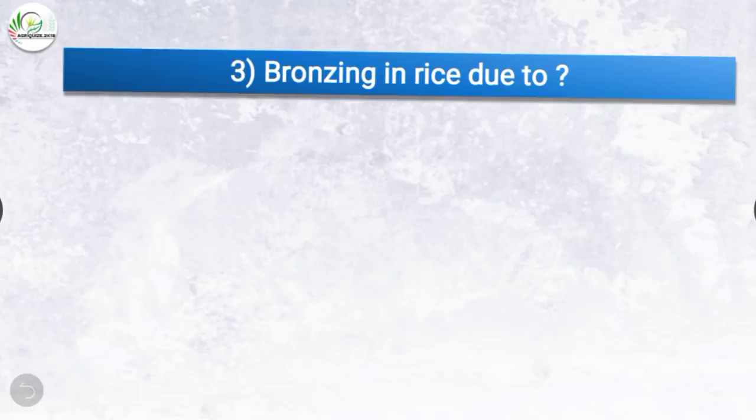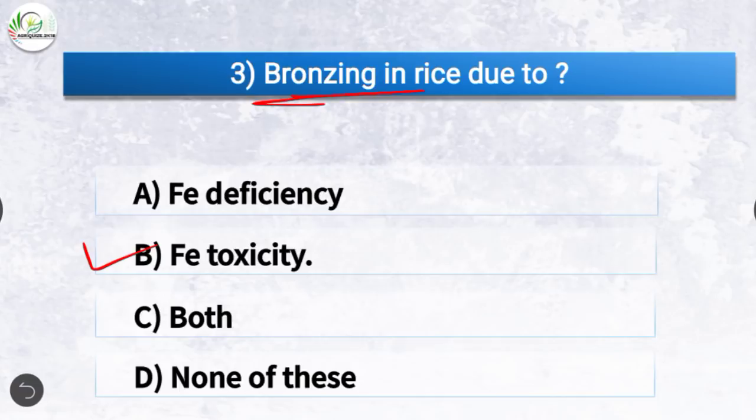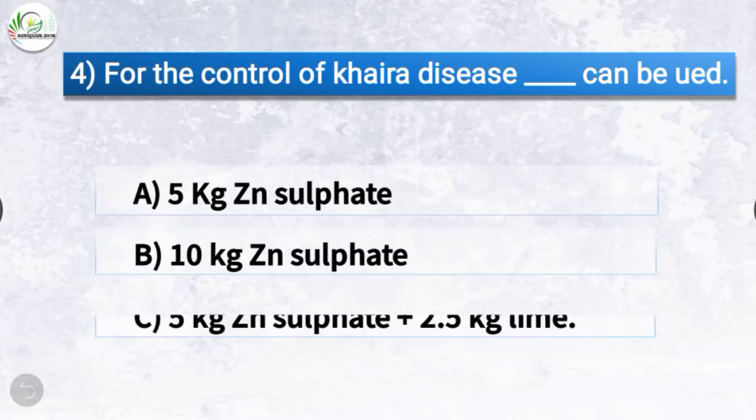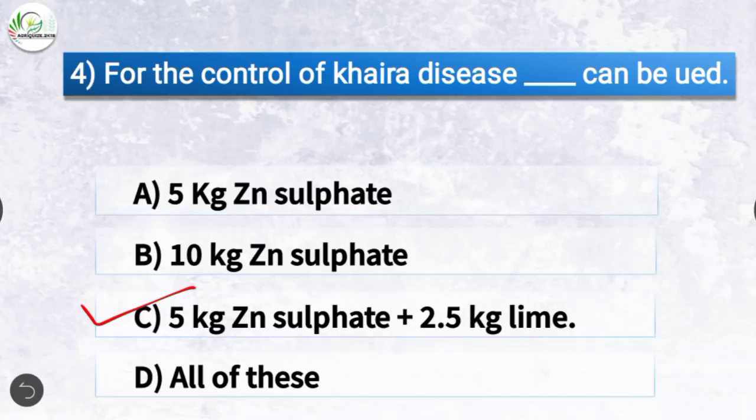Question number three: Bronzing in rice is due to? The correct answer is option B, iron toxicity. Bronzing in rice is due to Fe toxicity. Question number four: For the control of Khera disease, what can be used? The correct answer is option C.